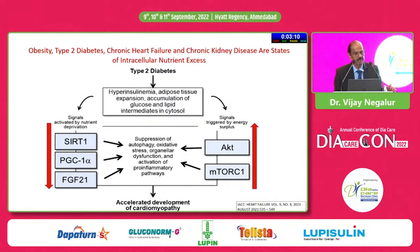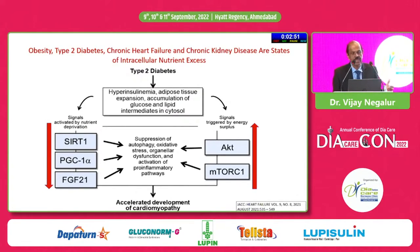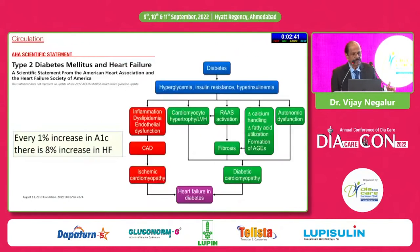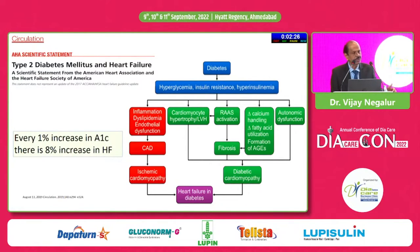In patients with diabetes, obesity, and chronic heart failure, the core problem is hyperinsulinemia, adipose tissue expansion, and accumulation of glucose and lipid intermediates, causing suppression of autophagy and oxidative stress. This results in upregulation of AKT and MTORC1, and downregulation of PGC1-alpha and FGF21. In summary, diabetes causes inflammation, dyslipidemia, and coronary artery disease, along with RAS activation, impaired calcium handling, and autonomic dysfunction, all resulting in diabetic cardiomyopathy and heart failure.